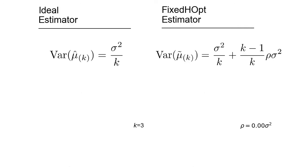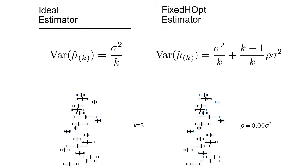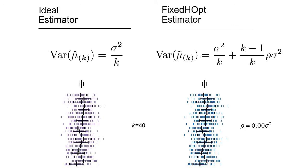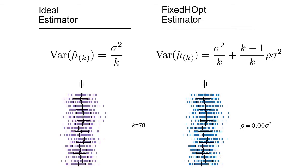Let's first make a simulation to visualize the behavior of both estimators. We have simulations according to the ideal estimator on the left and according to the fixed h-up estimator on the right. Each whisker is an independent simulation — we sample k points, compute the average (the center of the whiskers), and the standard deviation (the length of the whiskers). At the top, the large whisker represents the distribution of mean estimations. A good estimator should have all whiskers well aligned and variance close to 0. As we increase k, all whiskers slowly align in the center, and the standard deviation converges to 0. This is true for both estimators when the fixed h-up has 0 correlation.